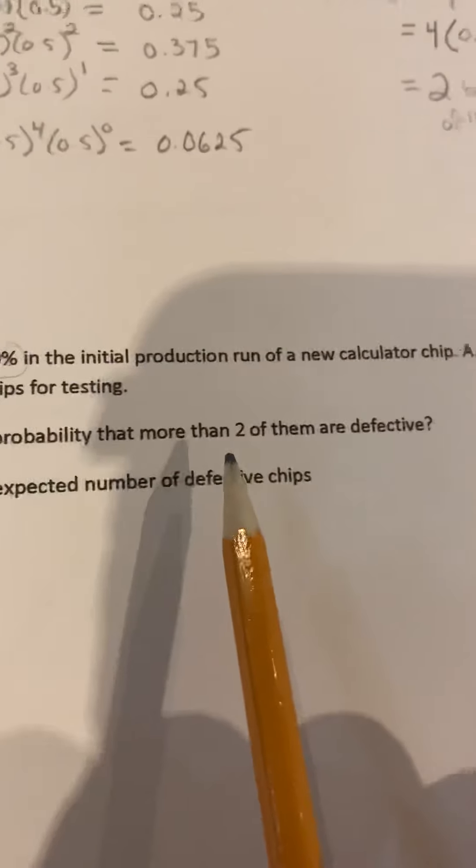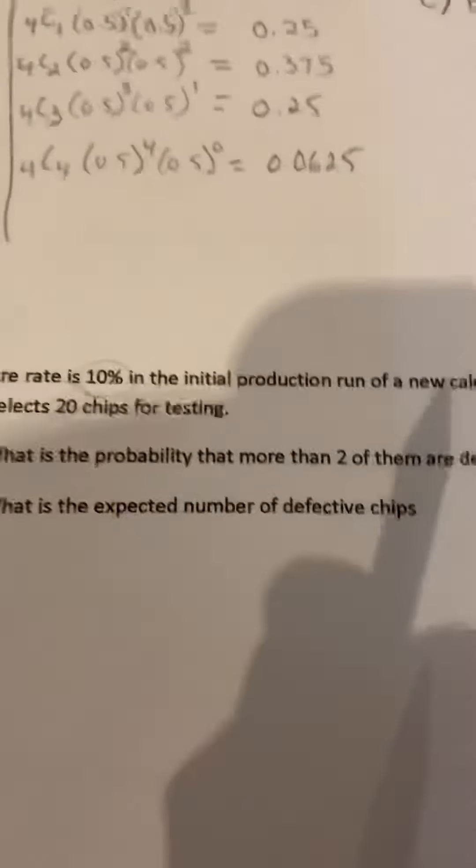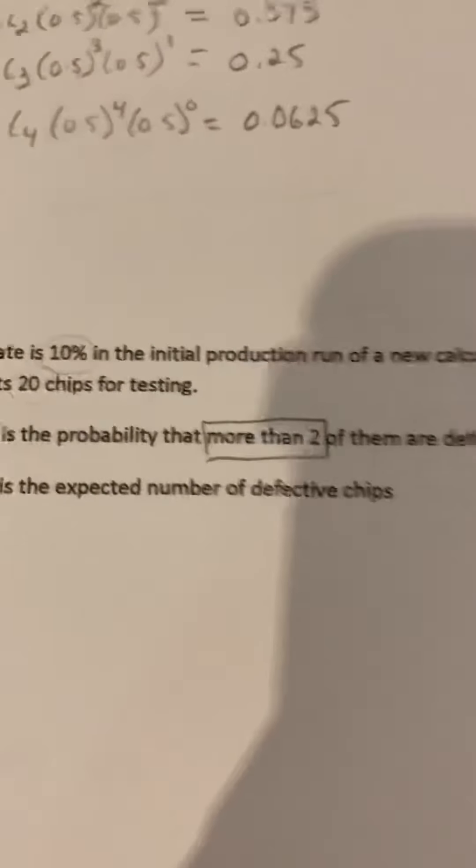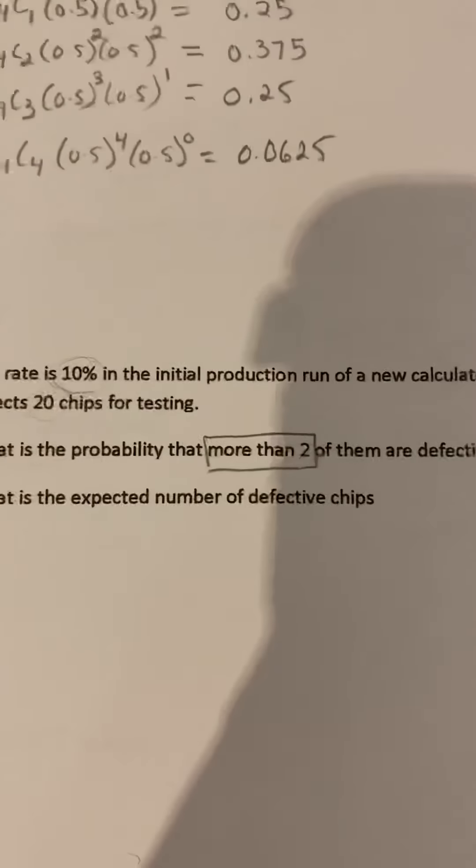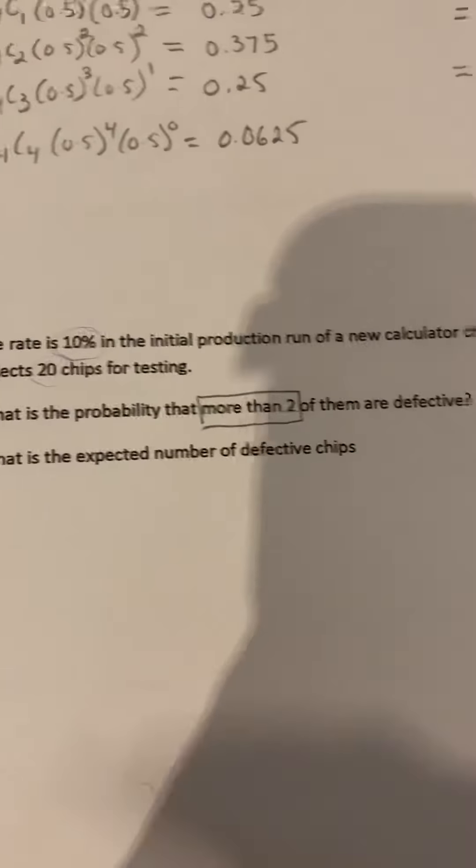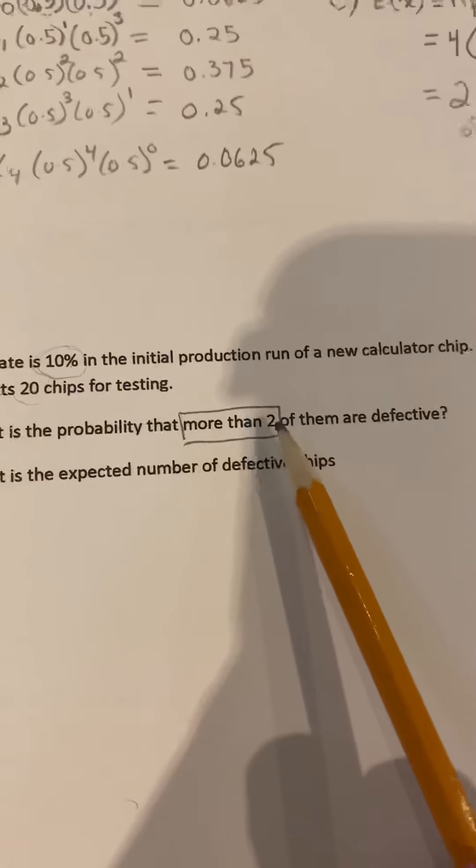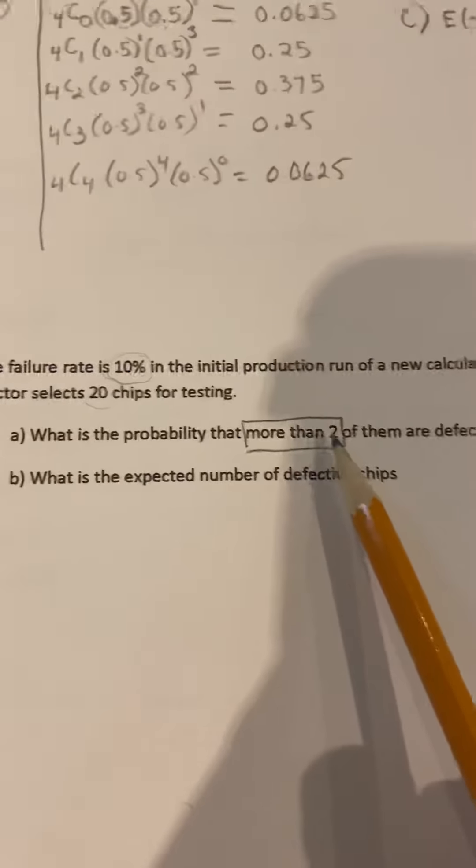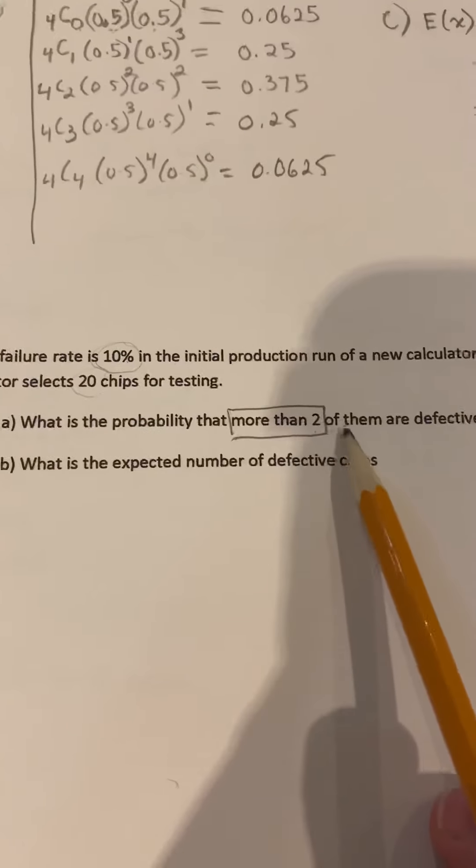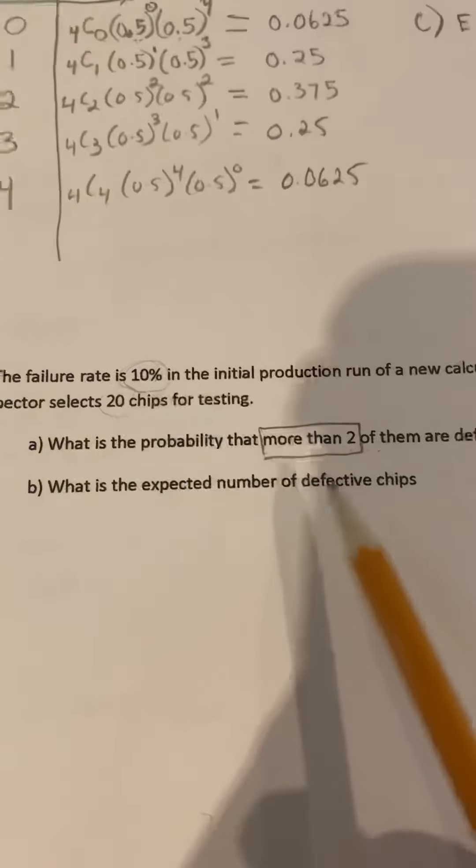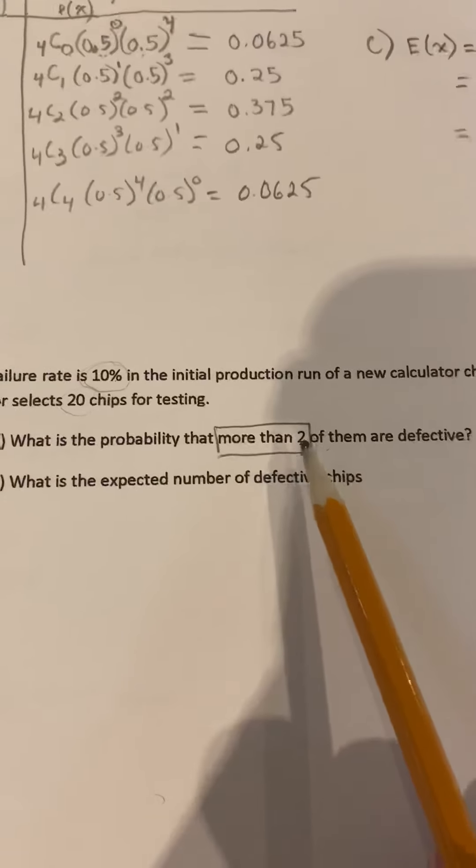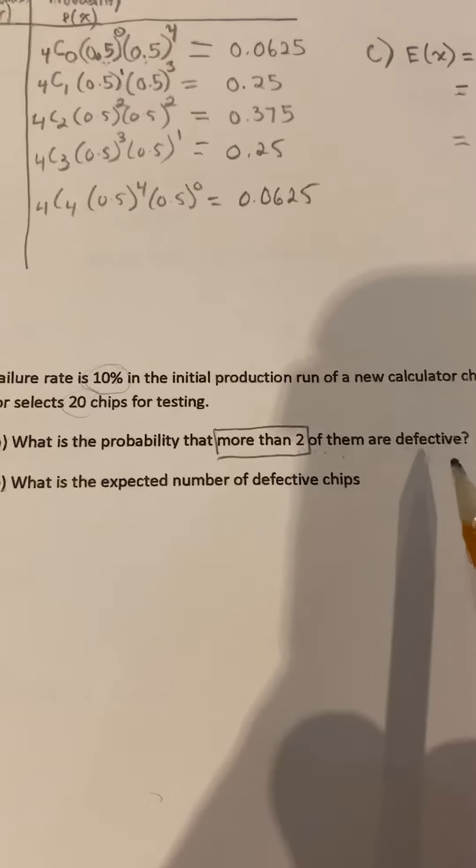What is the probability that more than two of them are defective? So if I were to have more than two defective chips, because we're doing 20 chips, we could do two defective, three, four, five, six, seven, all the way up to 20. So that would be a lot of work. Oh sorry, more than two, I can't have two. So more than two would be three, four, five, six, seven, eight, nine, all the way up to 20.